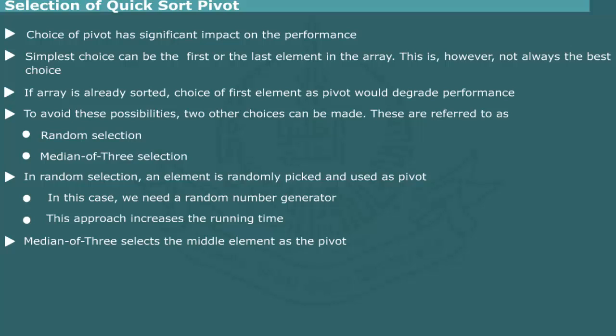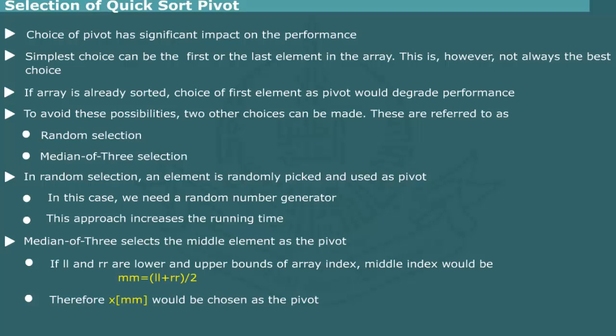Another method, known as median of three, selects the middle element as the pivot. For example, if LL and RR are lower and upper bounds of array X, the index of a middle element should be MM is equal to LL plus RR by 2. Thus, X of MM is chosen as the pivot. Most popular implementations of quicksort method follow this approach. Empirical studies show that the median of three choice not only avoids the risk of degradation, it actually increases the performance by 5-10%.